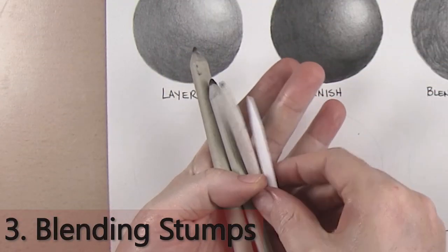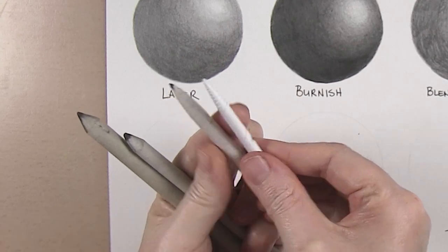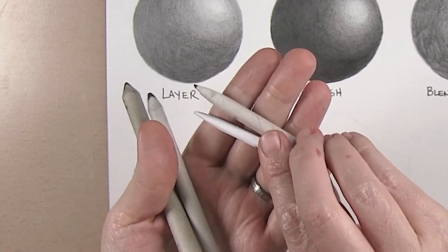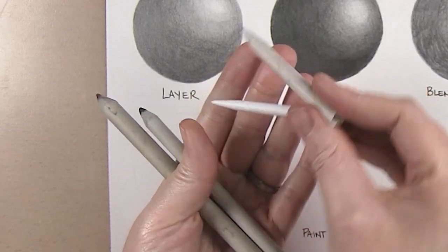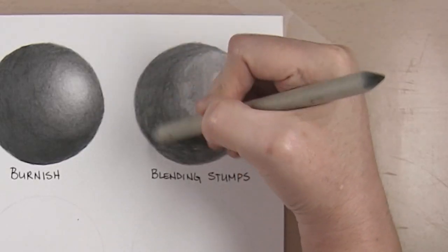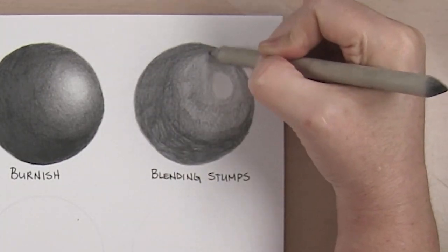Method three is blending stumps or tortillions. Blending stumps are compressed paper and tortillions are rolled. They both do the same job however. They come in various sizes so make sure you choose the size appropriate for the area you are blending. I personally prefer blending stumps.